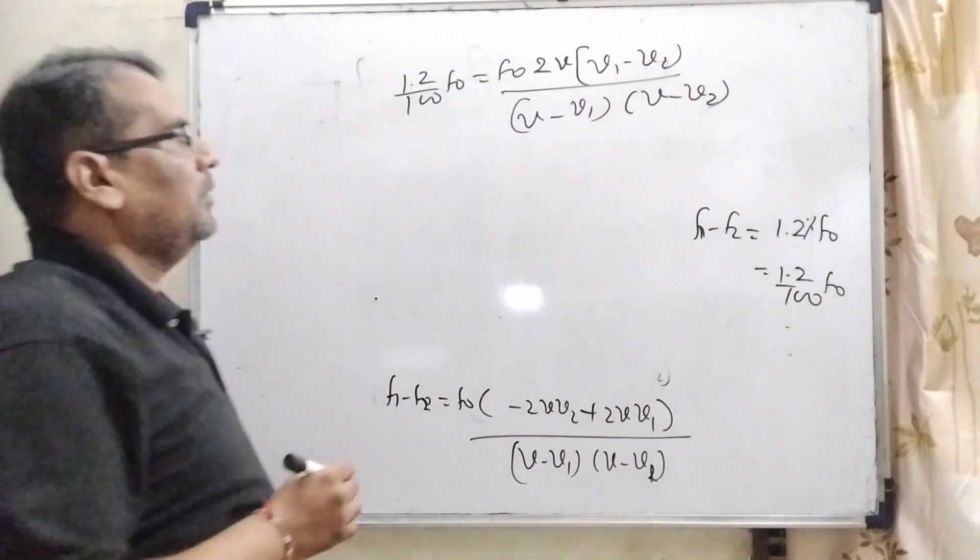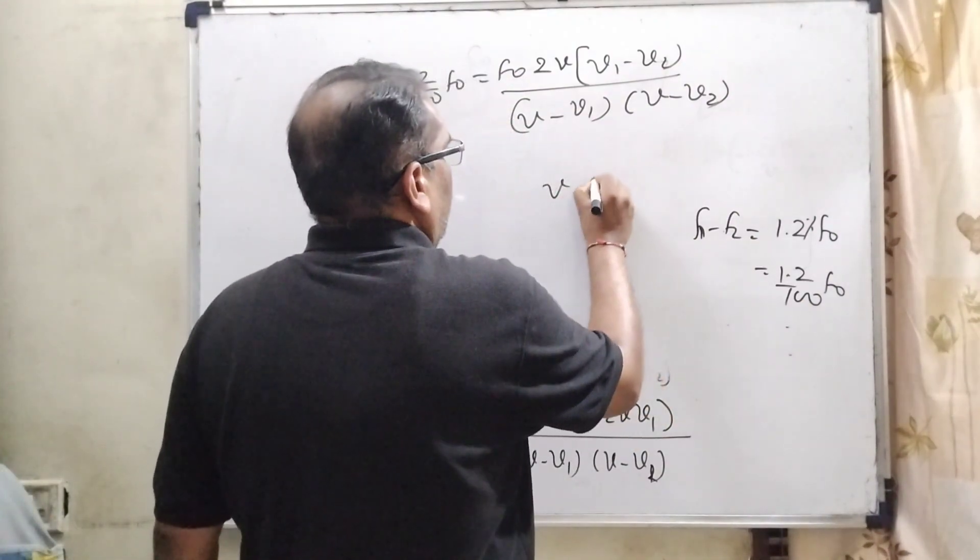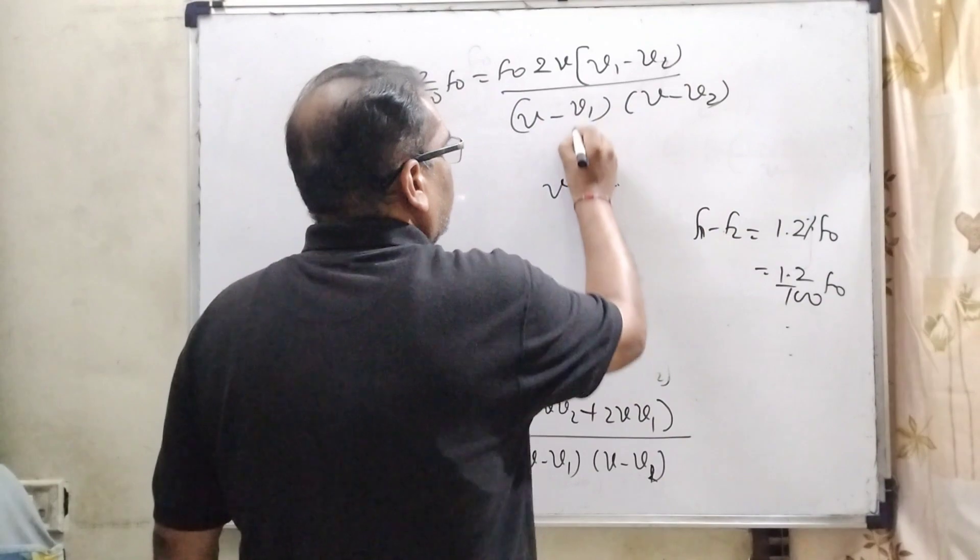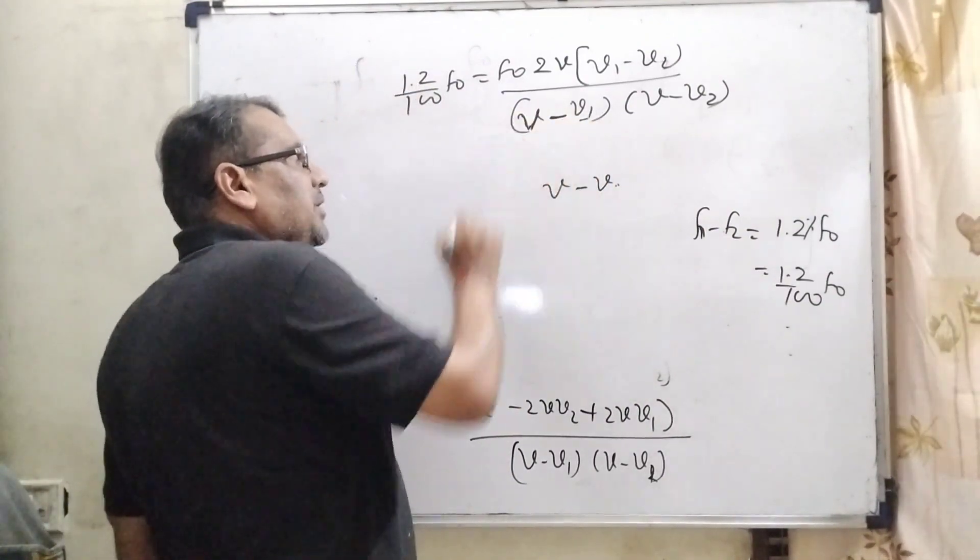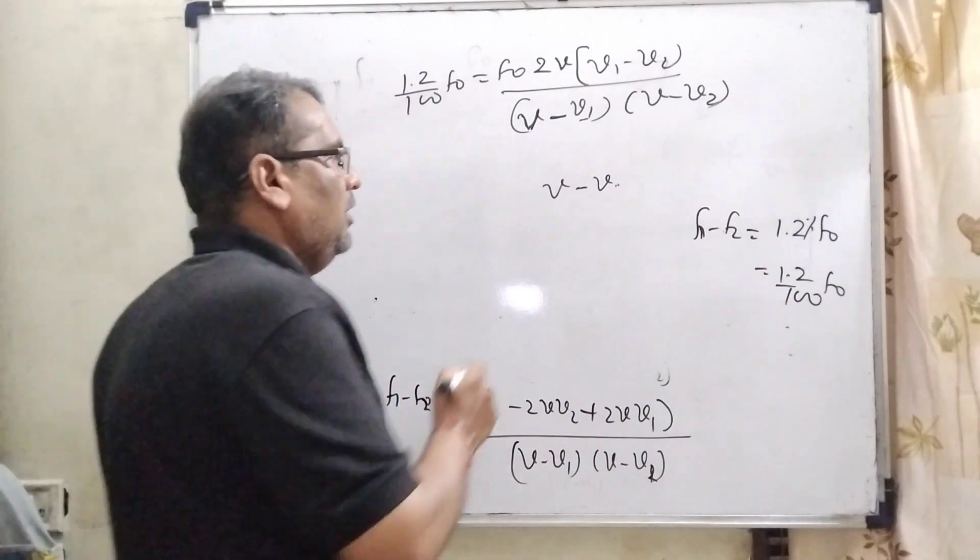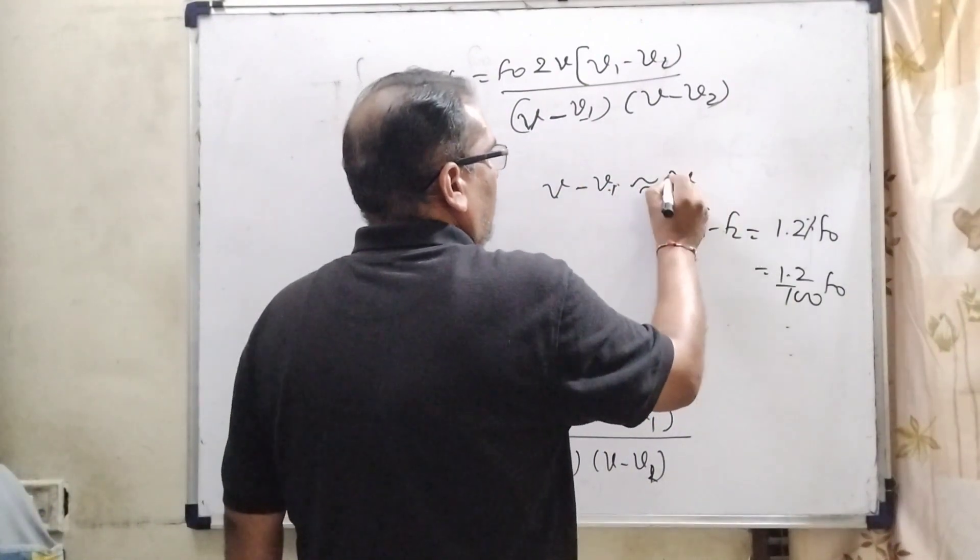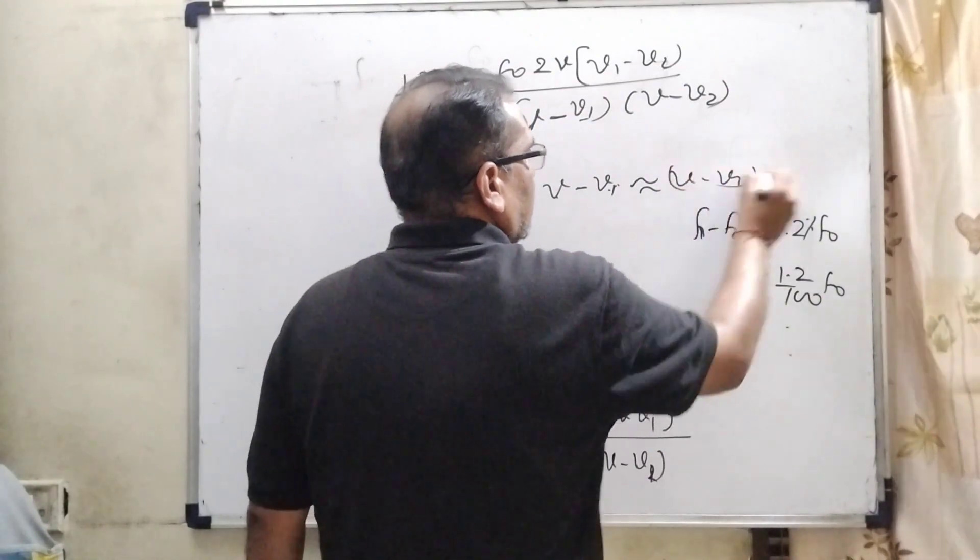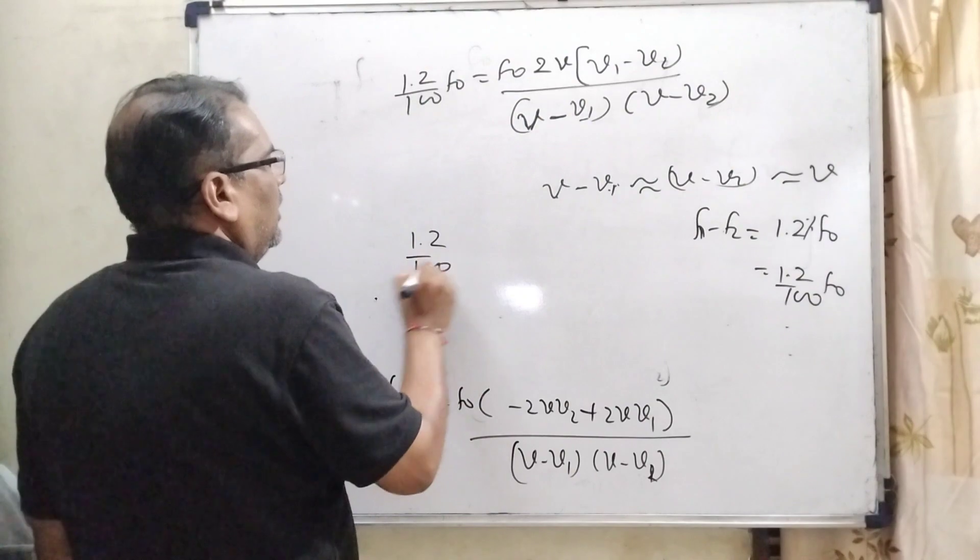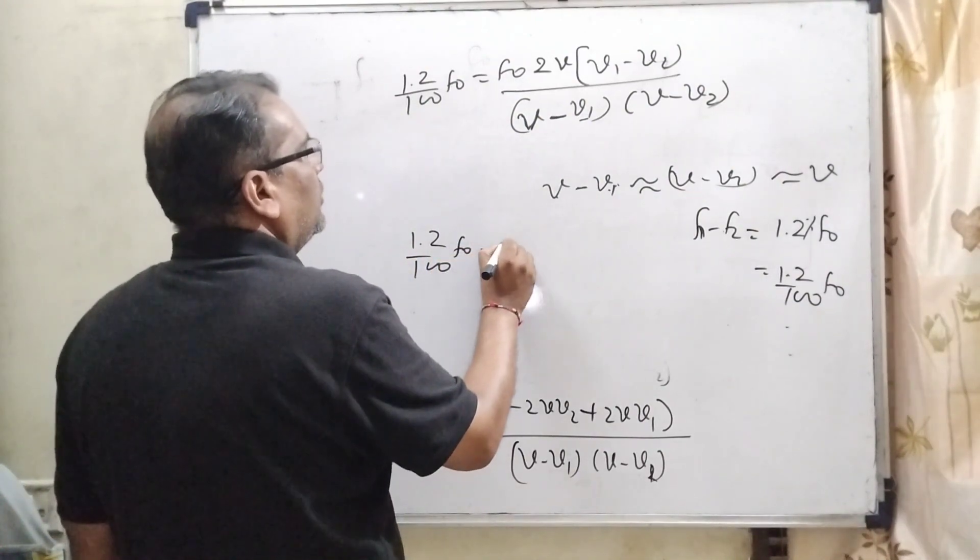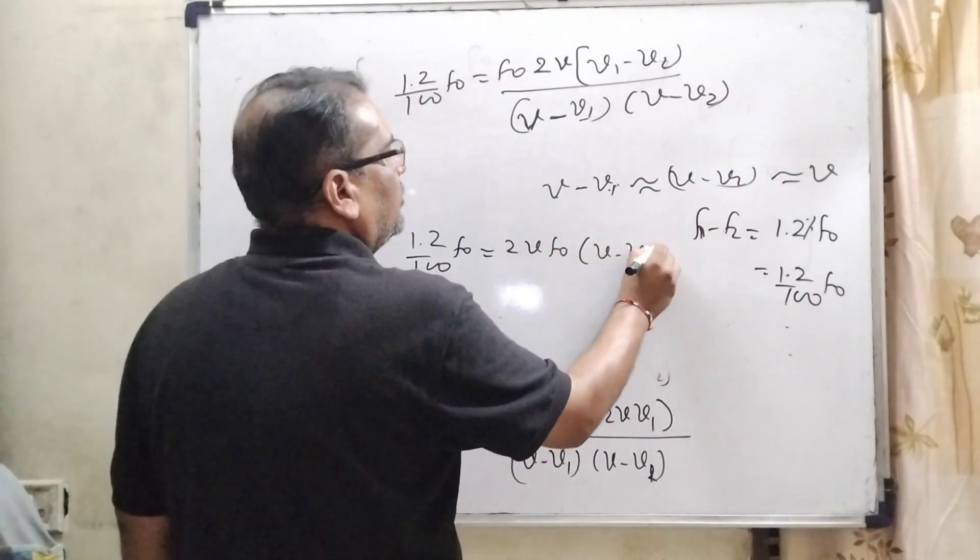Here V1 and V2 with respect to the speed of sound V is very small. So it may be considered V minus V1 and V minus V2 is considered equal to V. So here 1.2 upon 100 F0 equal to 2 V F0 times (V1 minus V2) upon V square.